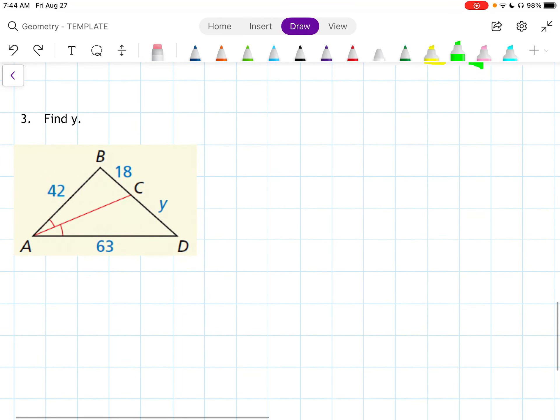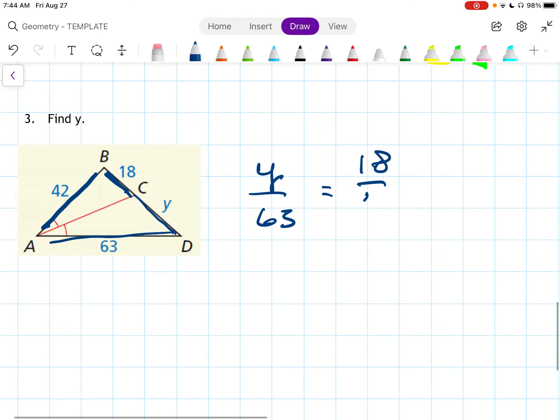So look at number three. So I want to find Y. I want to be able to put Y on top. Y is the right cut. So I'm going to put it over the right side, 63. Then I'm going to go to the left cut, 18, over the left side, 42.